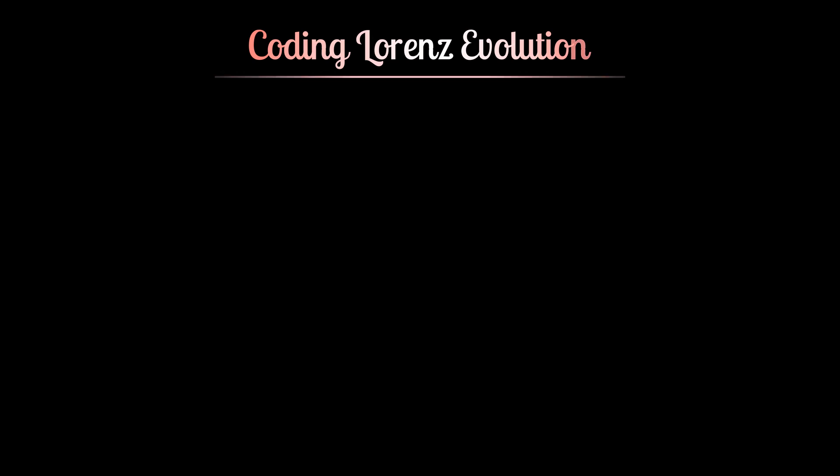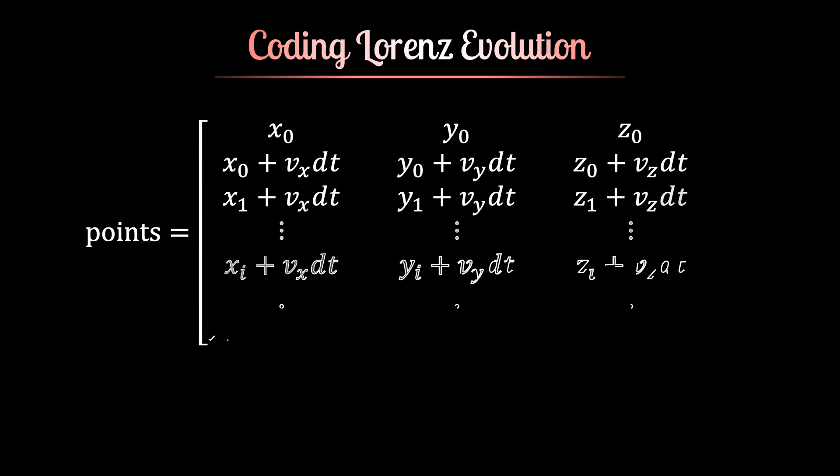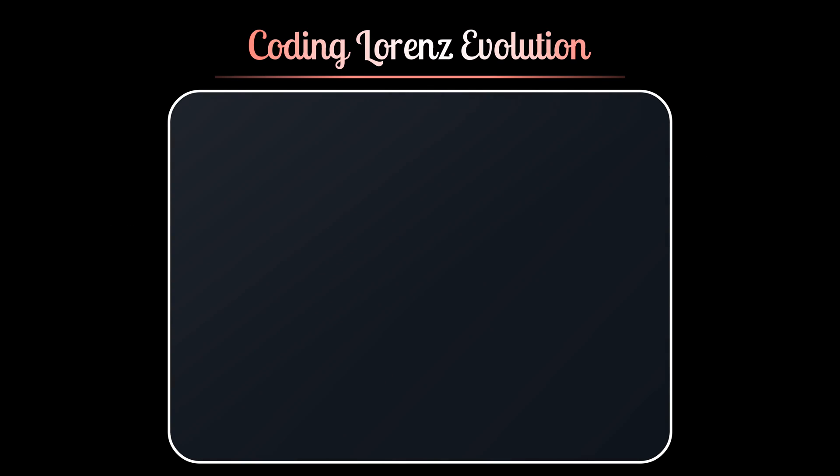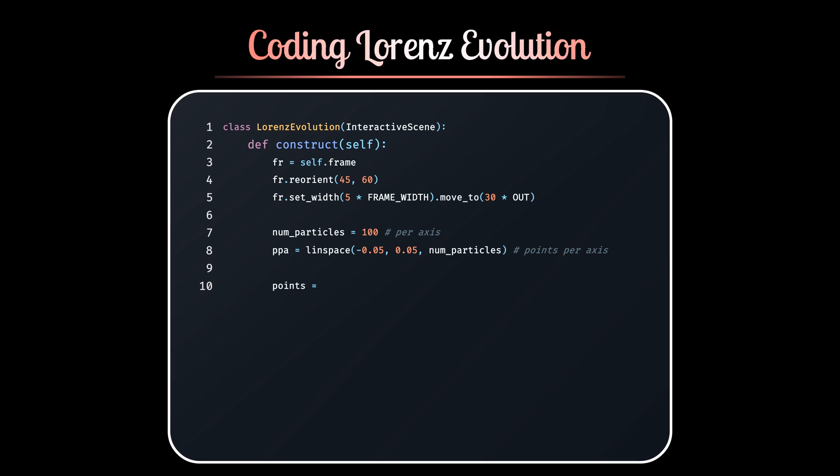Now, for the computation part of the problem, you must have remembered the evolution matrix of the Lorentz Attractor. In the same way, let's start by making an n by 3 matrix, which consists of 3D coordinates of n particles. For now, I'm setting the value of n to be 1 million. And these particles will be arranged in a cube with a side length of 0.1 units. There are 100 particles along each axis, and every particle is separated by a distance of 0.001. I guess this level of precision should be sufficient for simulating the chaotic behavior of Lorentz Attractor.